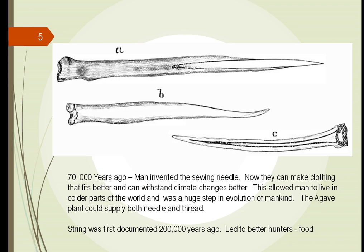They learned, years before the sewing needle, that they could make string by taking the different fibers of the plants and folding or twisting them together to make string or rope. Combining the two together, they could make clothing. And that clothing allowed them to explore different parts of the world — they could now go further north, they could go hunting further north.